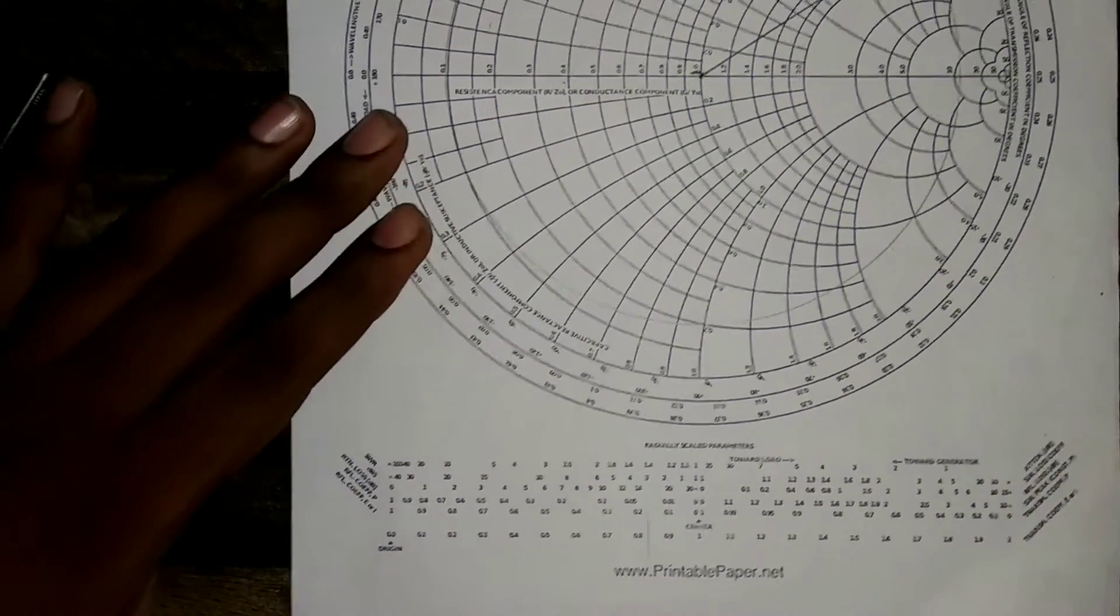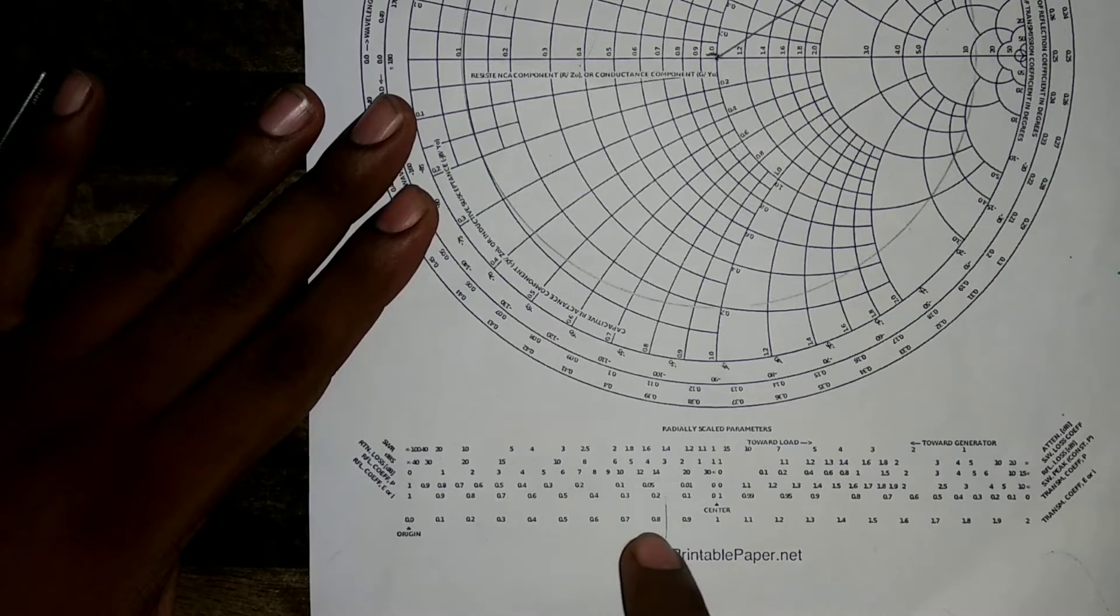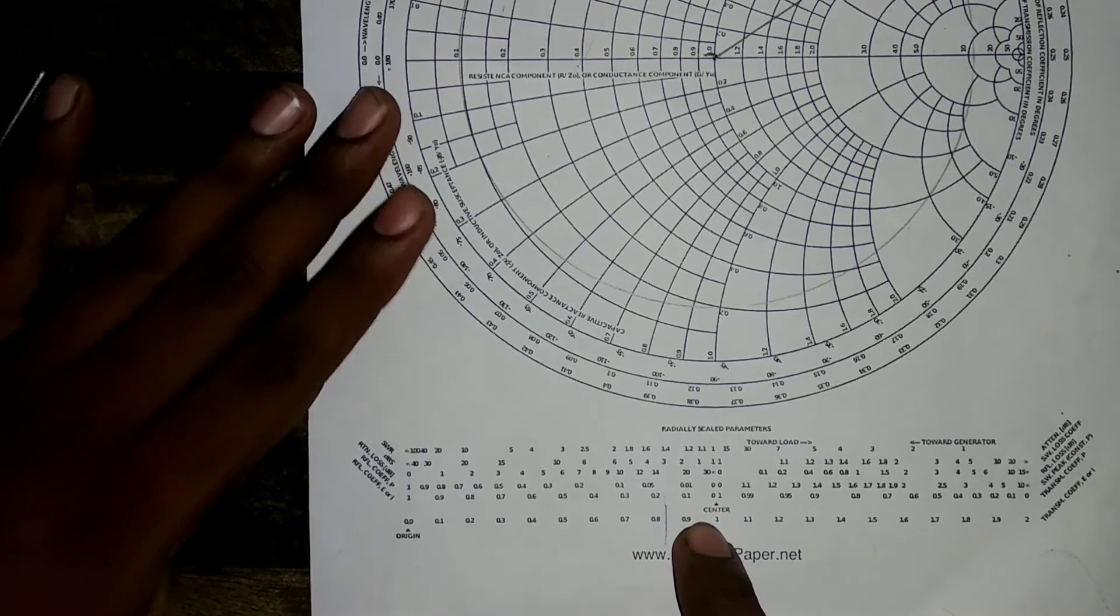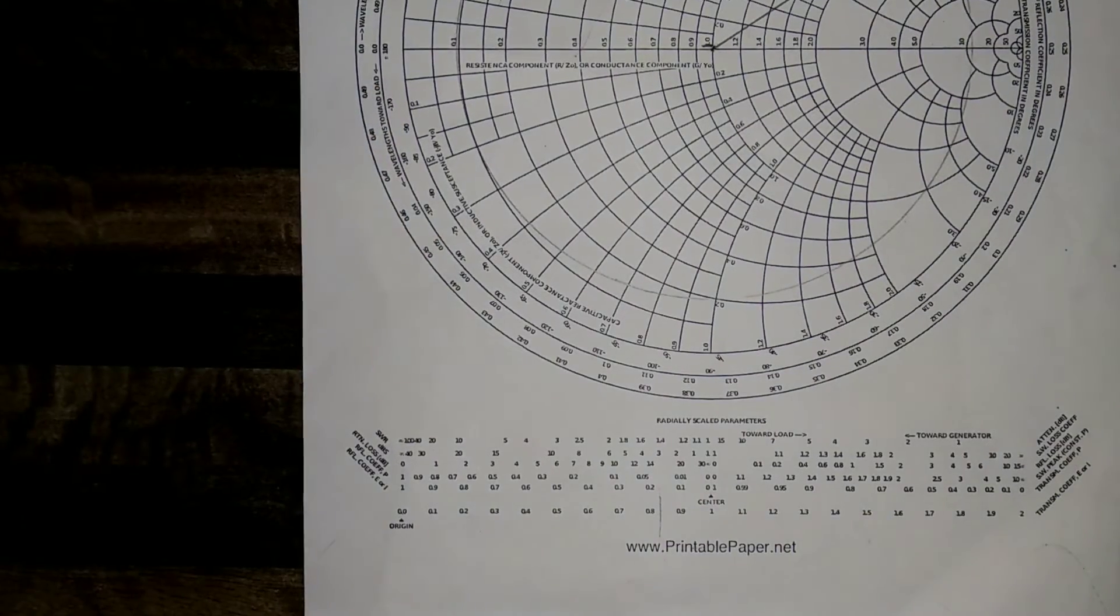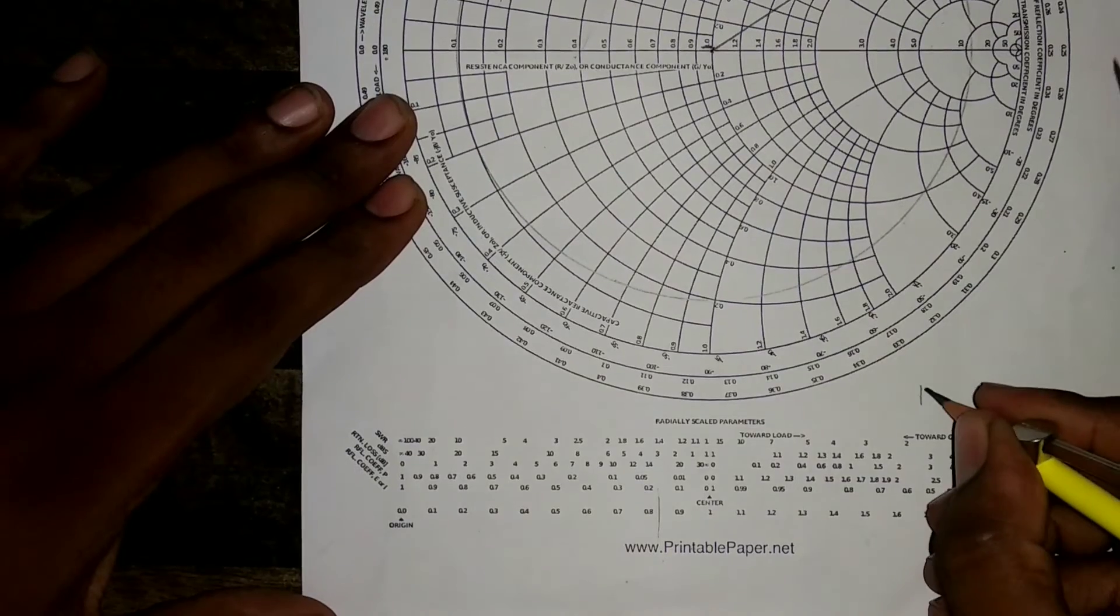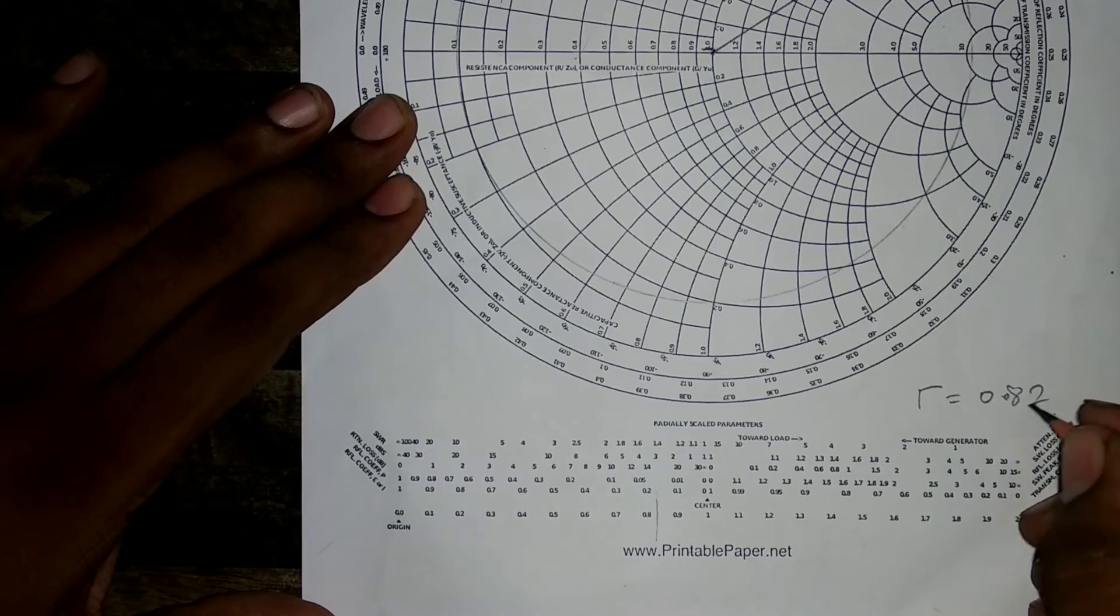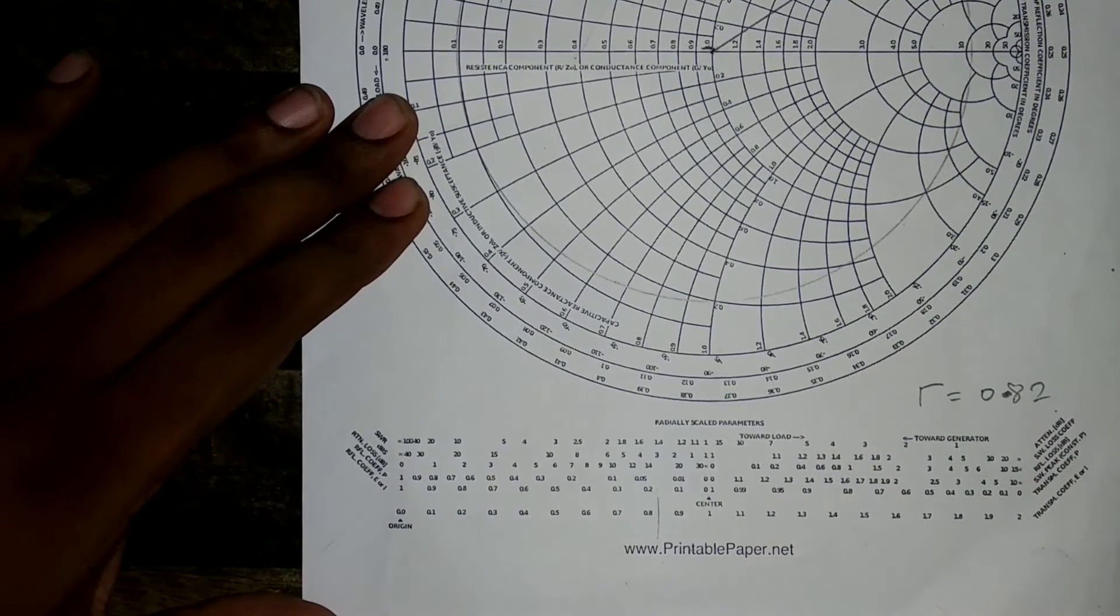Now you can see the scale starts from origin 0 then 0.1, 0.2. Now I have marked after 0.8 between 0.8 and 0.9. Therefore, it comes out to be near about 0.82. So I have got my reflection coefficient. It is represented by tau equals to 0.82. This is my reflection coefficient. This is magnitude.